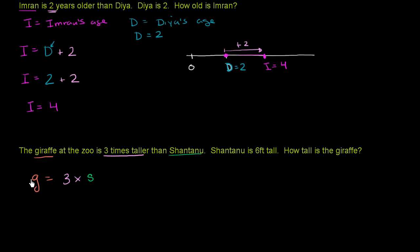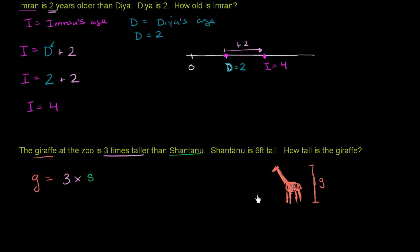Let's be clear about what we did: G represents the height of the giraffe and S represents the height of Shantanu. Let me draw a giraffe here — so if this is the giraffe, they're saying that if you take Shantanu's height times three, you get the giraffe's height. So this is G. If I divide the giraffe's height, one, two — Shantanu might look something like this. One times his height, two times his height, three times his height, and you would get to the height of the giraffe.